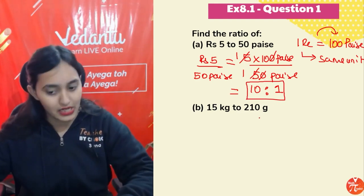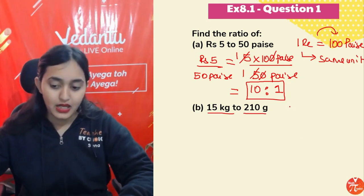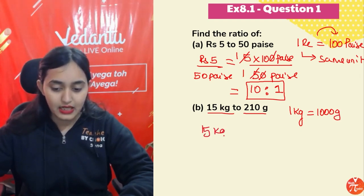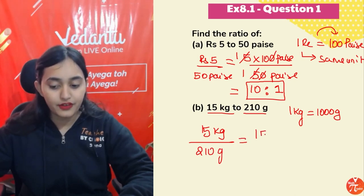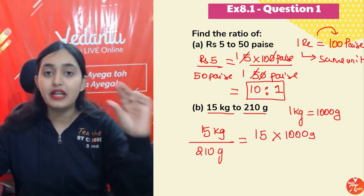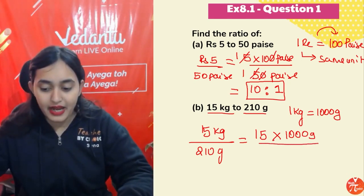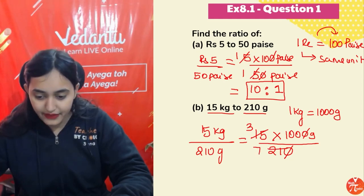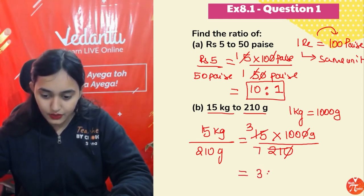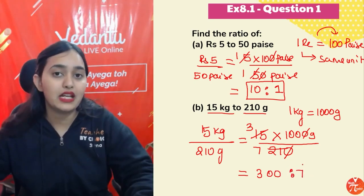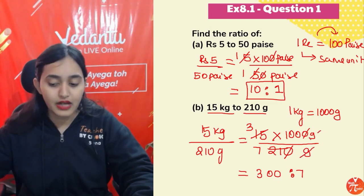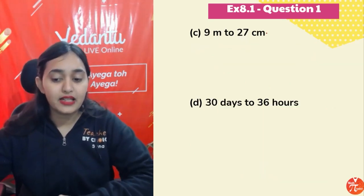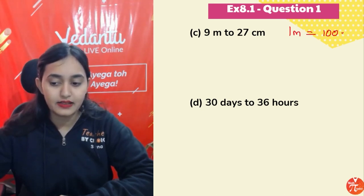Similarly, 15 kg and 210 grams — we know 1 kg equals 1000 grams, so 15 kg equals 15000 grams. Dividing 15000 grams by 210 grams: cancelling zeros, 5 threes are 15 and 5 sevens are 21, giving us 300 divided by 7. Since 300 and 7 have no common factors, the ratio is 300 is to 7.